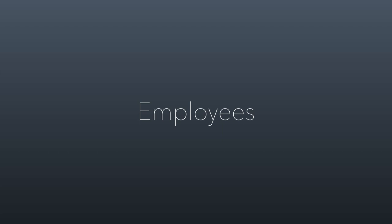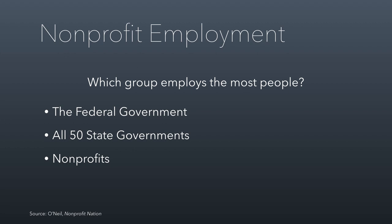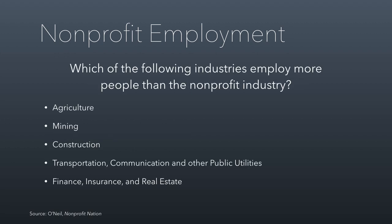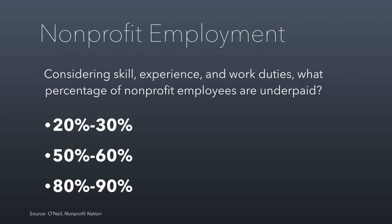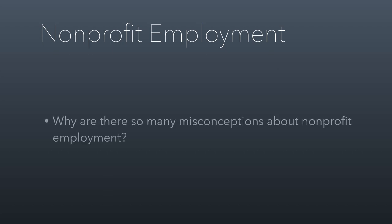Now we're going to talk about employees, starting with some demographic questions. For example: what group do you think employs the most people? Which of the following industries employ more people than the nonprofit industry — agriculture, mining, construction, transportation, communication, other public utilities, or finance, insurance, and real estate? What percentage of nonprofit program officers are women? We talked about how women tend to be underrepresented on boards of directors — are they underrepresented in staff positions as well? And what percentage of nonprofit employees are underpaid relative to equivalent for-profit roles? We'll talk about that in class.